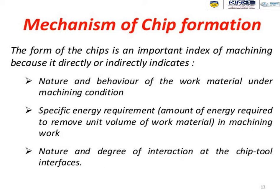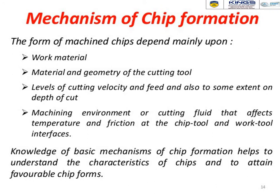In chip formation, the work piece is machined using a tool and excess material is removed in the form of chips. The shear plane shows how shear deformation converts the excess material into chips. The form of chips is an important indicator in machining because it directly or indirectly indicates the nature and behavior of the work material under machining conditions, specific energy requirements, and the degree of interaction at the chip-tool interface. Chip form depends mainly on work material, cutting tool geometry, cutting velocity, feed, depth of cut, and cutting fluid.